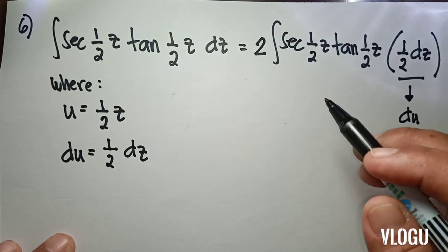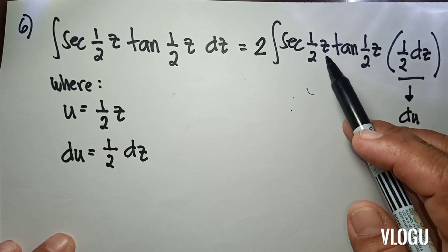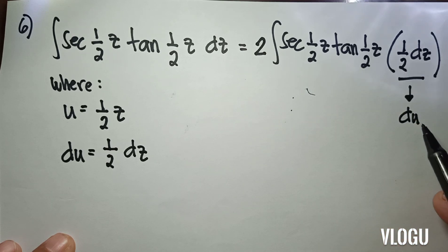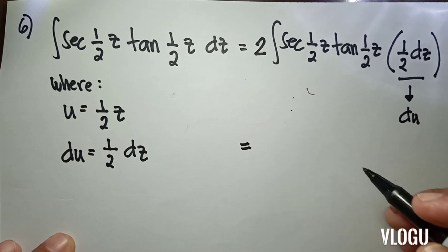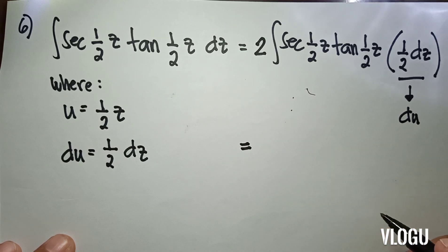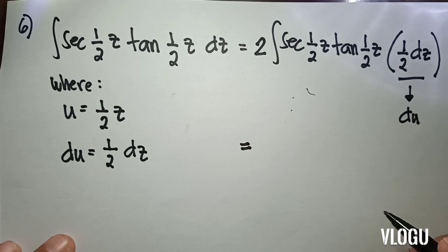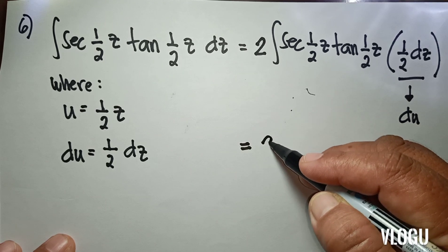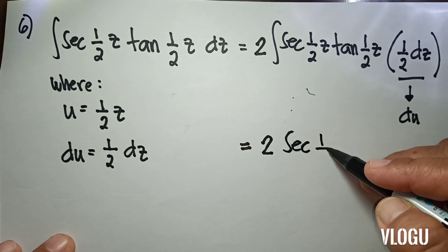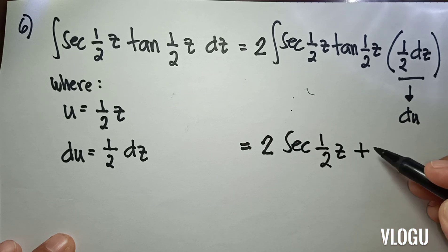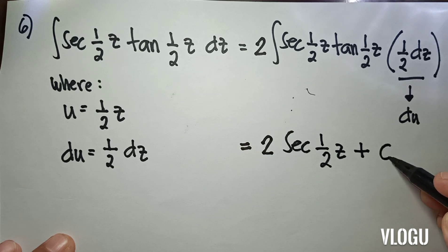This is a form of sec u tan u du. From our formula, the integral of sec u tan u is equivalent to sec u. So our final answer is 2 sec(½z) plus c.